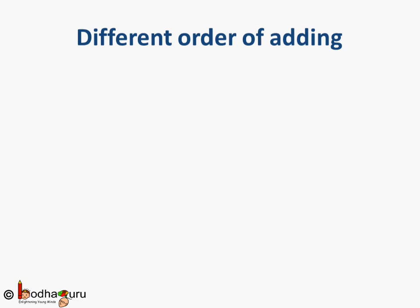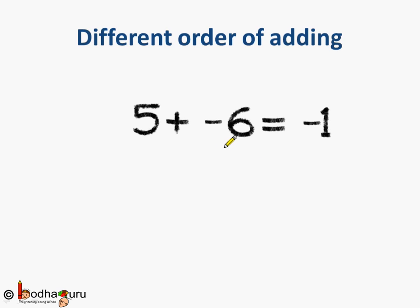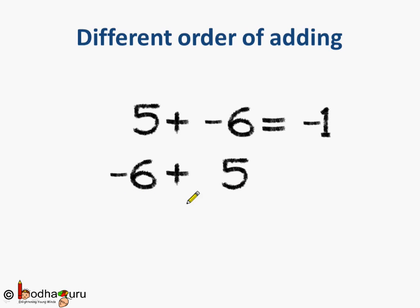Let's add integers first. 5 plus minus 6 is equal to minus 1. And now if we change the order, we add 5 to minus 6, so it becomes minus 6 plus 5 is equal to minus 1.